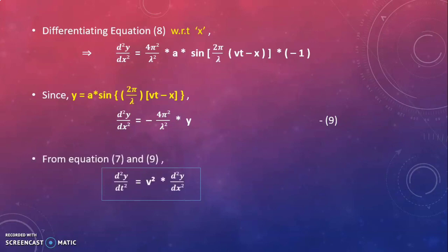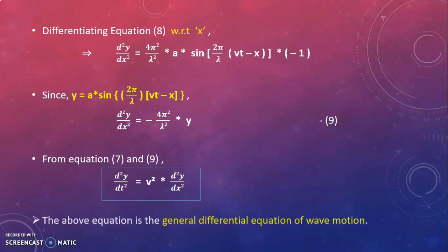From equations 7 and 9, d²y/dt² = v² × d²y/dx². This equation is the general differential equation of wave motion, or the velocity of a progressive wave in a medium.